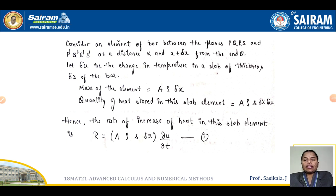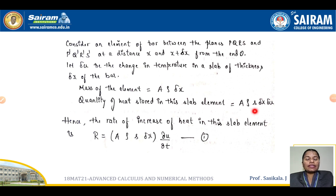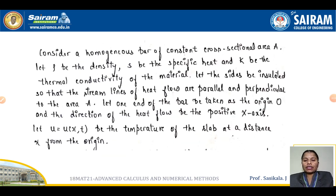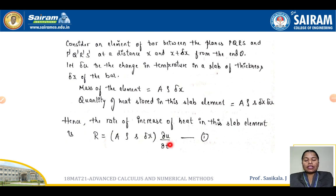Let delta u be the change in temperature in a slab of thickness delta x. The mass of the element is A·rho·delta x. The quantity of heat stored in the slab element is rho·S·delta x·delta u. Therefore, the rate of increase of heat in the slab element is R = A·rho·S·delta x · (∂u/∂t). This is equation 1.